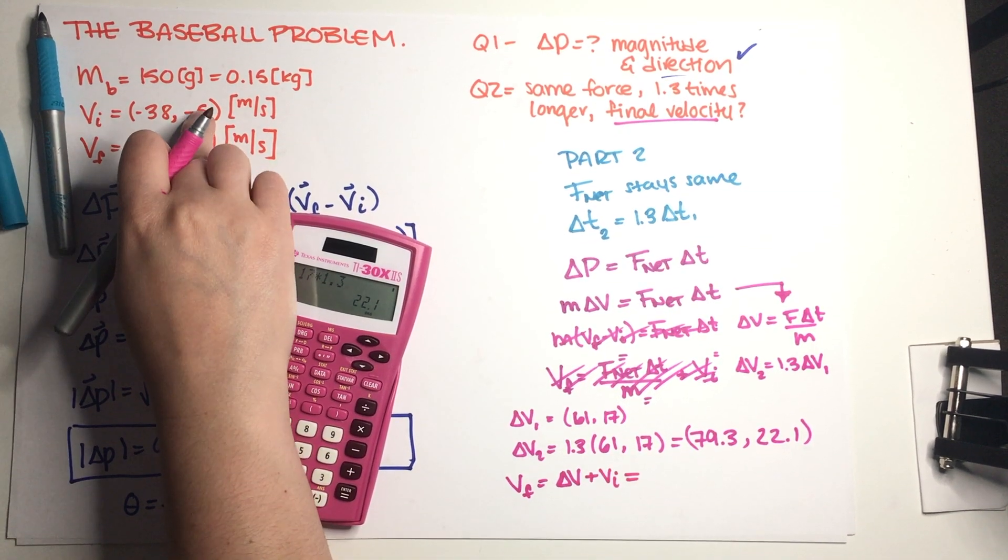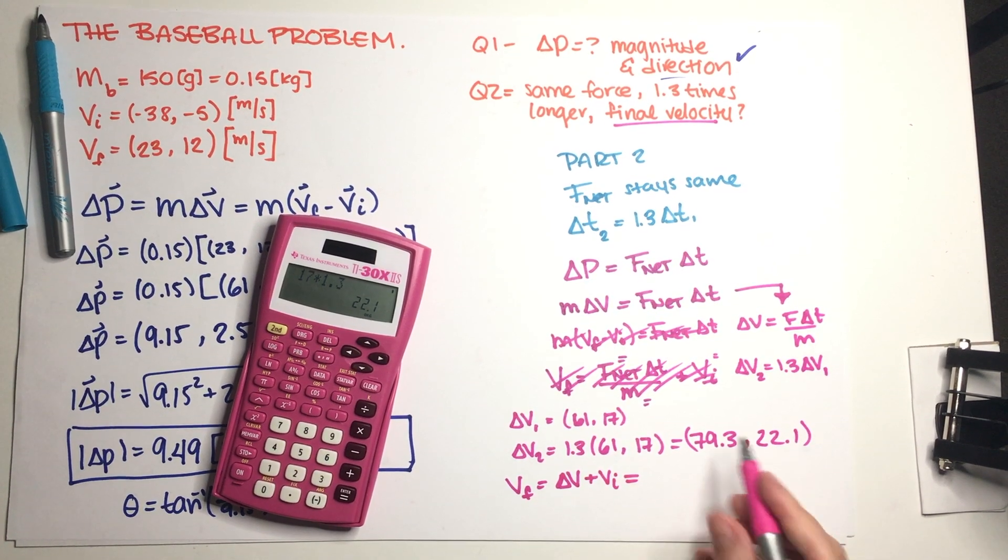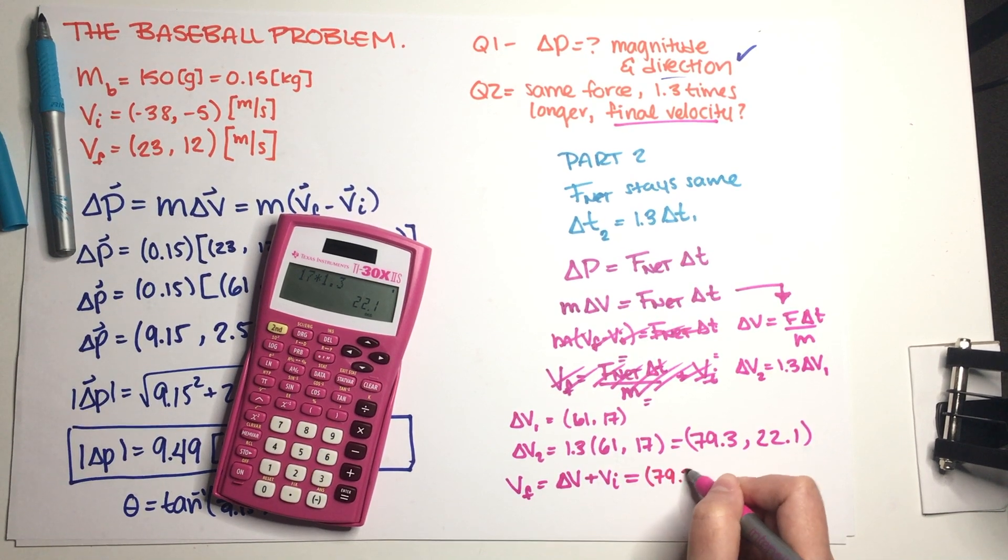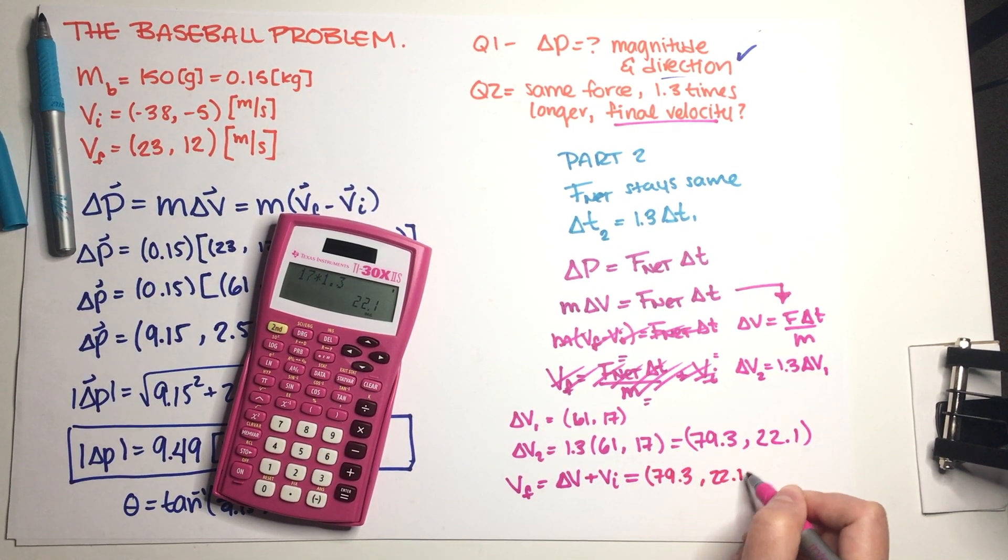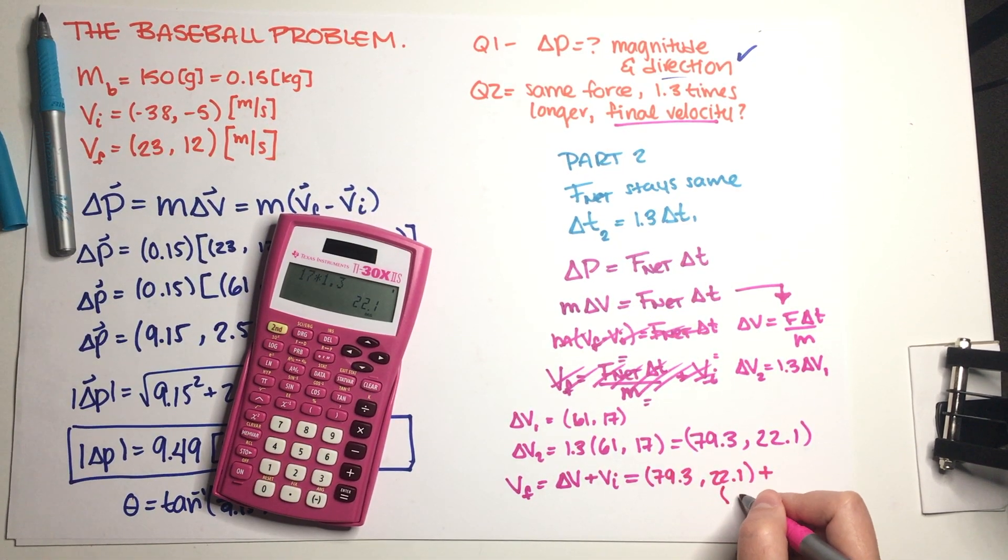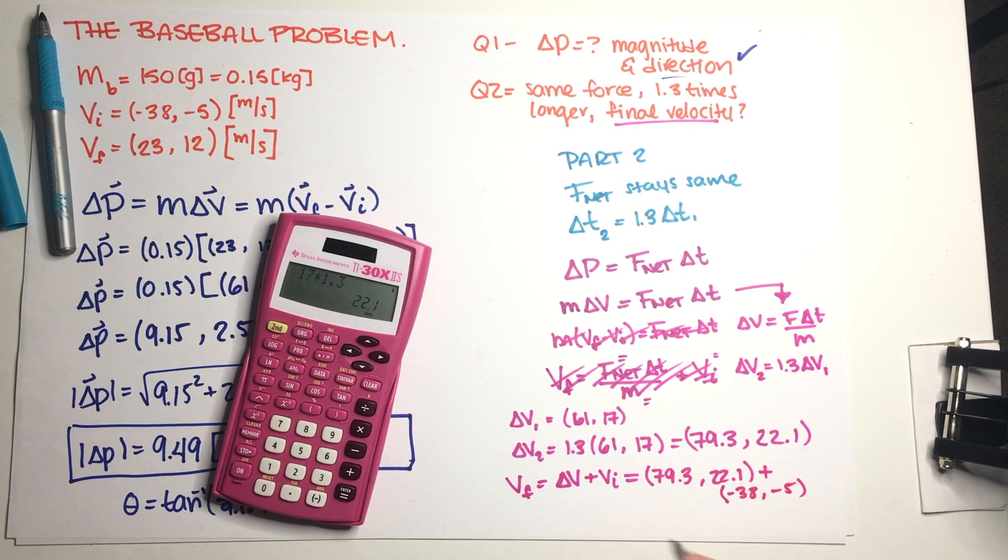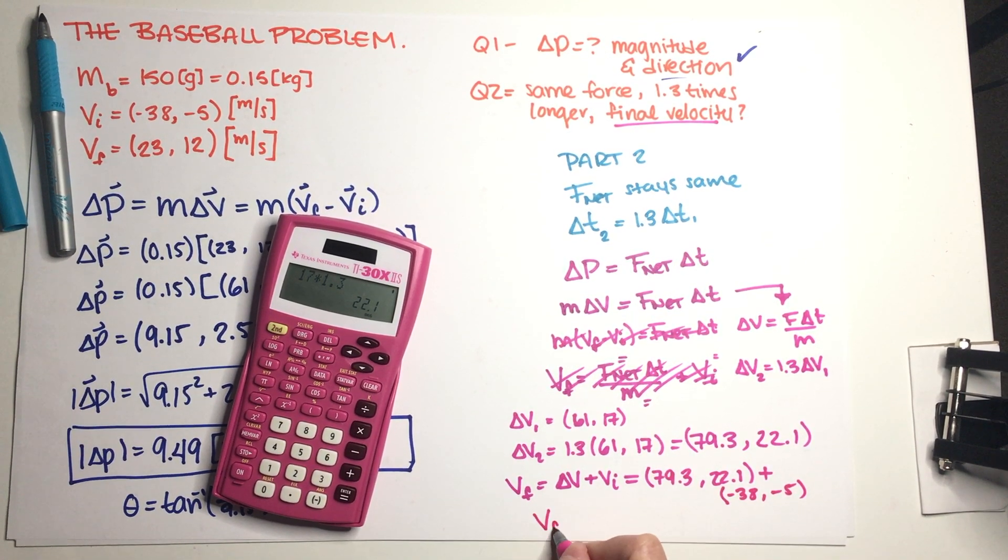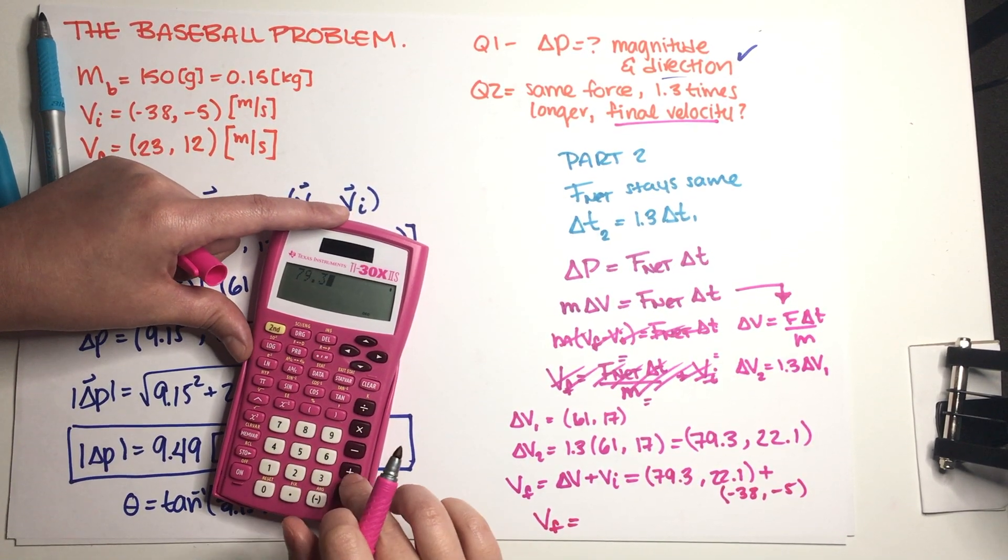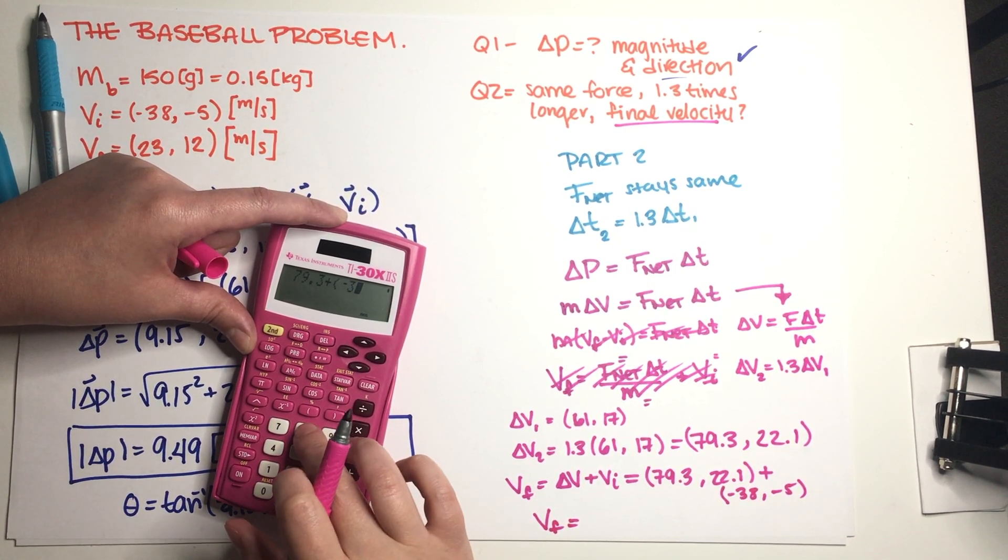So now we have our initial velocity, we have our new delta v, and now we can figure out what v final is. So I'm just going to go ahead and do that. Delta v is just this quantity over here and I'm just going to add v initial which is this quantity over here.